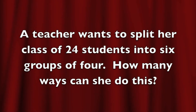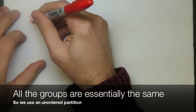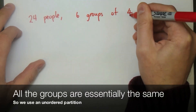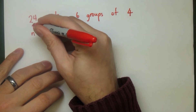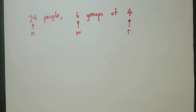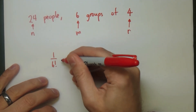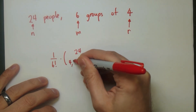Let's say a teacher wants to split a class of 24 students into 6 groups of 4. How many ways can she do this? This is going to be an unordered partition because it doesn't matter what group a person actually ends up in. So we have 24 people, we want 6 groups of 4. We identify n as the total number of people, m as the number of groups, and r as the size of the groups.